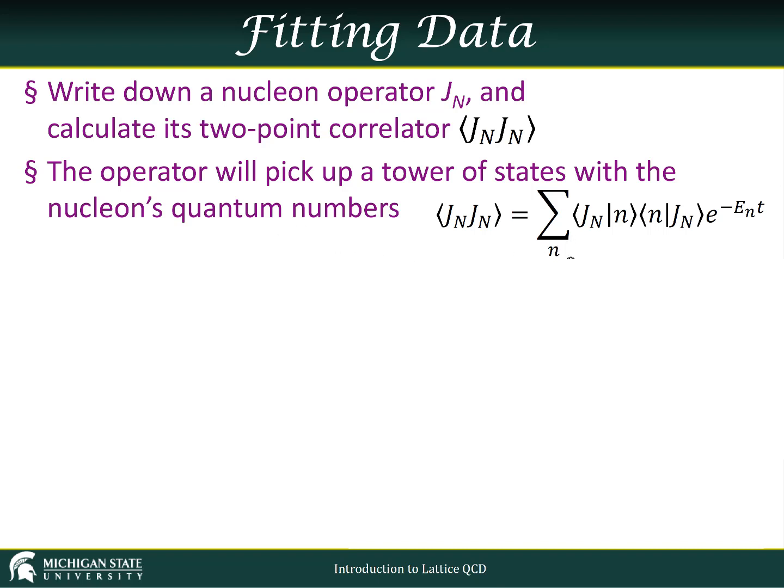Which we can represent this way, the sum over all of those states, which we index by n, this overlap between the creation operator and that state, this overlap between that state having propagated across the lattice and the annihilation operator. And there will be a factor of e to the minus e sub n of t, e sub n being the energy of this state.